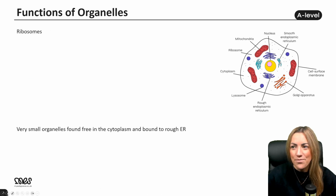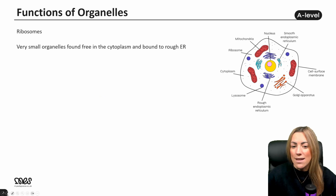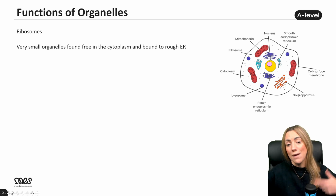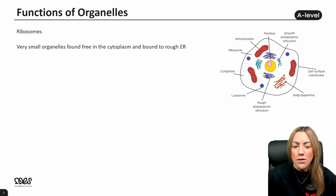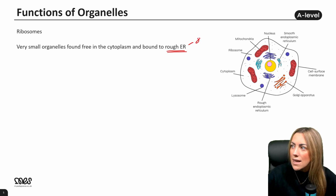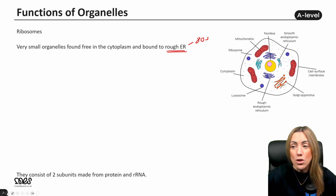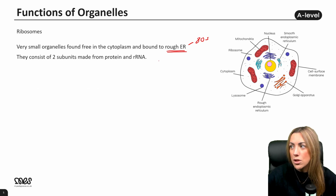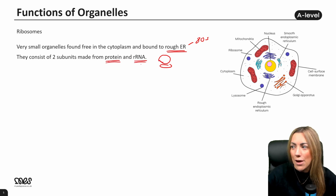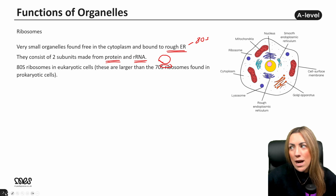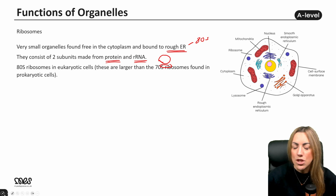Ribosomes are very small organelles. They are not membrane-bound, and we should know they are found in eukaryotic and prokaryotic cells — free in the cytoplasm, but also bound to the surface of the rough endoplasmic reticulum. These would be the 80S ribosomes found in the cytoplasm and attached to the rough ER in a eukaryotic cell. They consist of two subunits — a larger subunit and a smaller subunit — and are made from protein and ribosomal RNA. 80S ribosomes are larger than the 70S ribosomes found in prokaryotic cells.